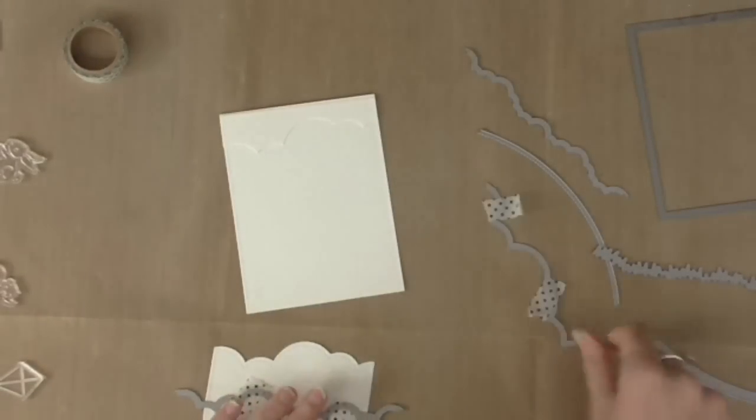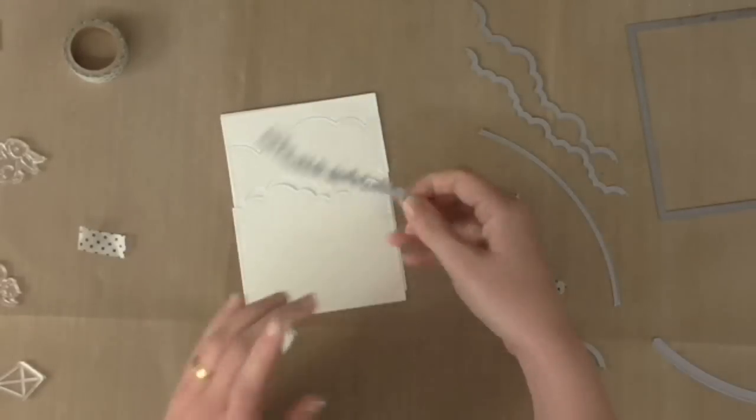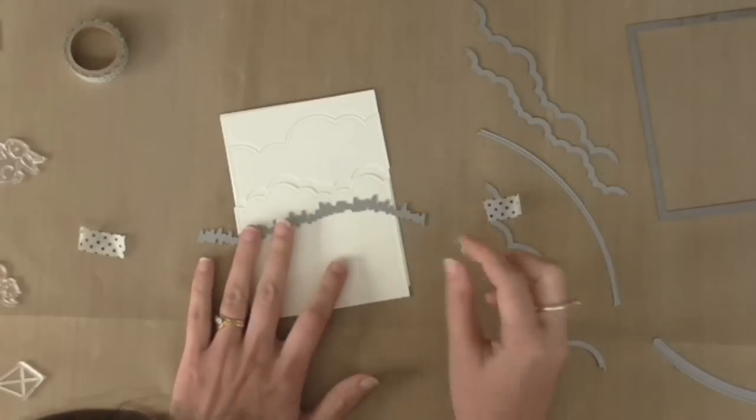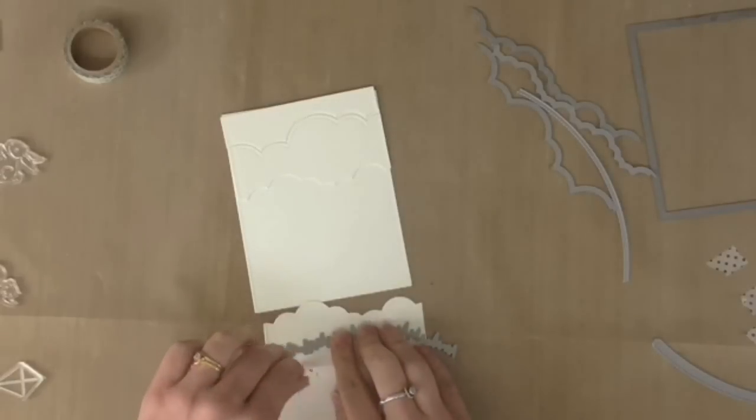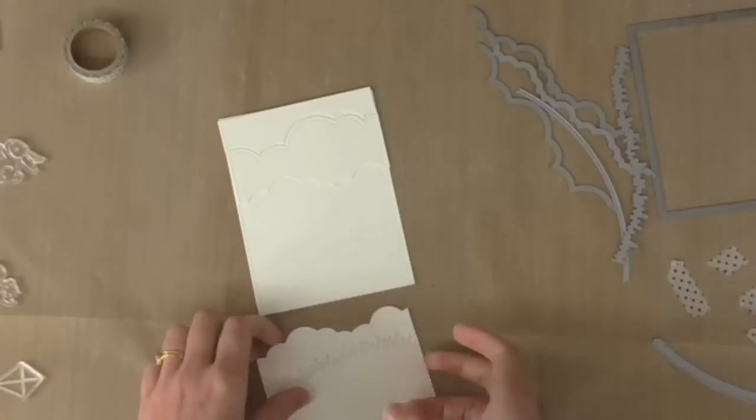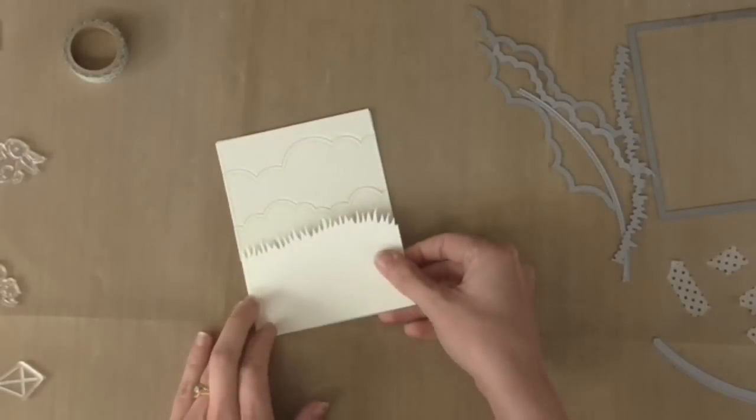to cut out the top piece of cardstock and these are all going to be inlayed together to create the scene and I'm just going to cut a grassy border on the bottom here as well. So now I have four almost like jigsaw pieces that all fit together.